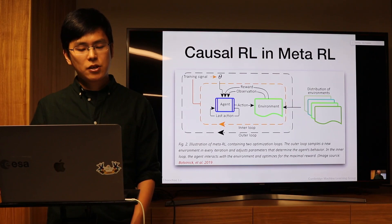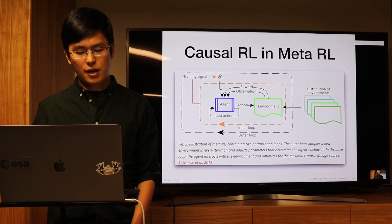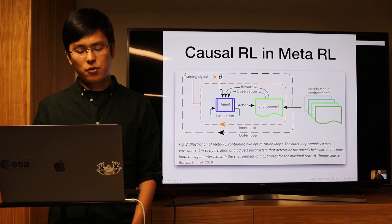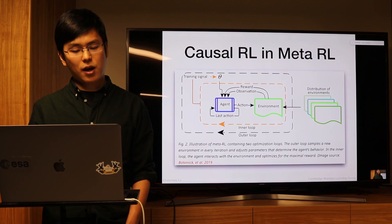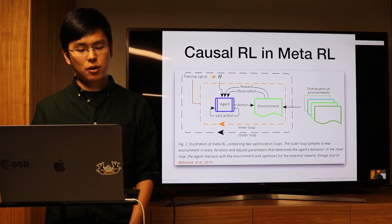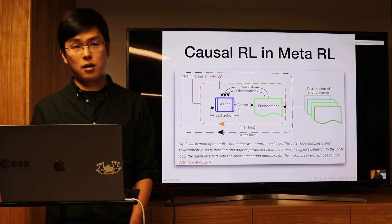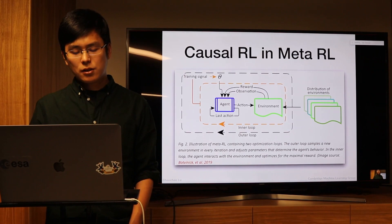Similarly in meta-reinforcement learning: different environments share the same causal structures, which represent the broadest family of distributions — not only observational but also interventional and counterfactual distributions. This allows the agent to cover the broadest possible distribution family.